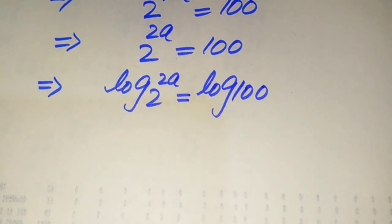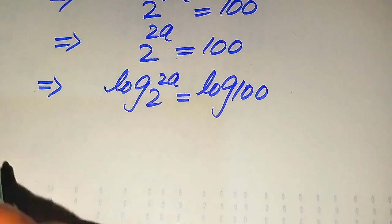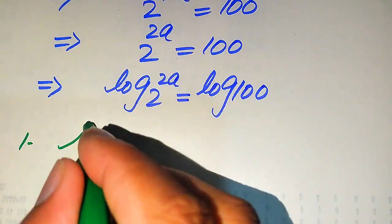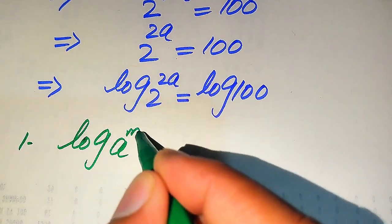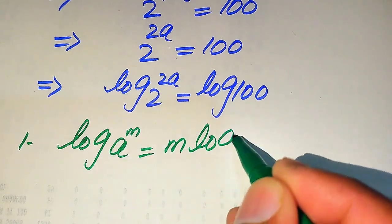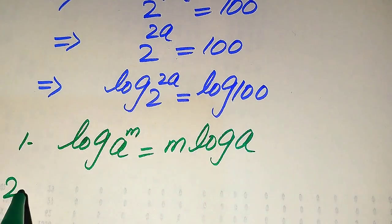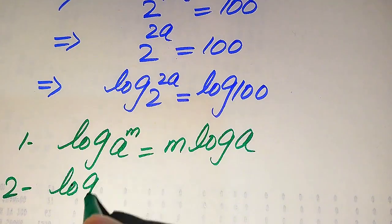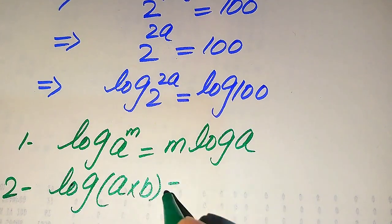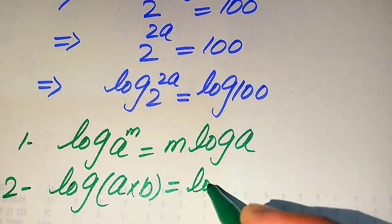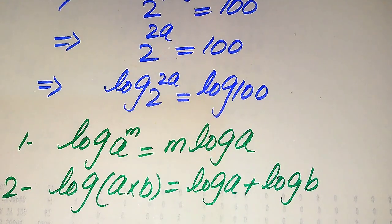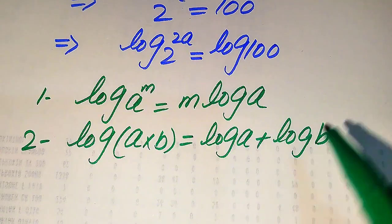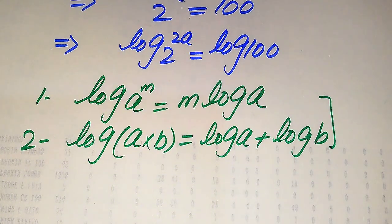We need to use two properties of log. The first property is that log of a to the power of m equals m times log a. The second property is that log of a multiplied by b equals log of a plus log of b. We need these two properties to solve this problem.